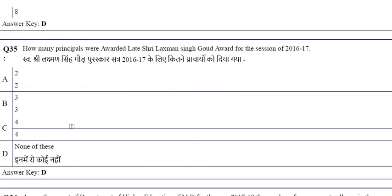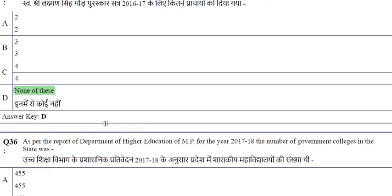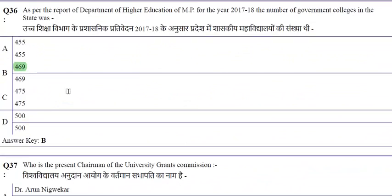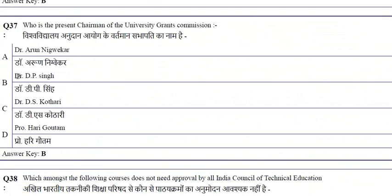Regarding the Late Shri Lakshman Singh Award for 2016-17, the right option is 'none of these.' As per the Department of Higher Education MP report for 2017-18, the number of government colleges in the state was 469. The Chairman of the University Grants Commission is Dr. D.P. Singh, who was earlier the Vice Chancellor of a university.